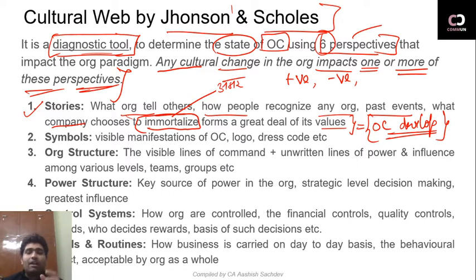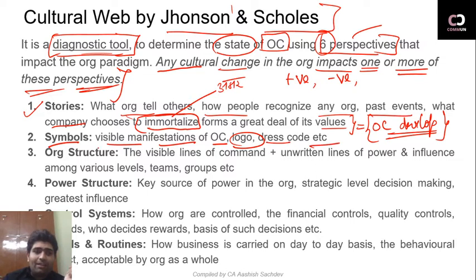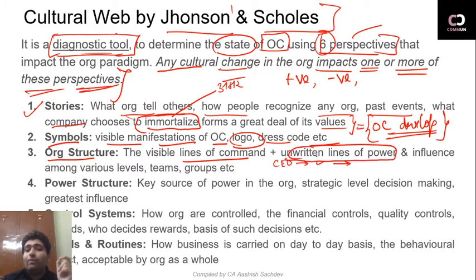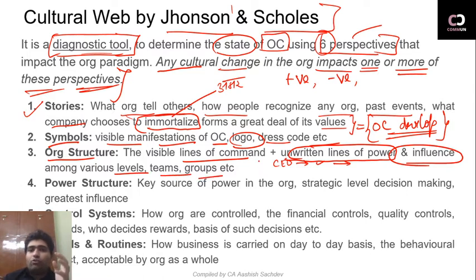Stories are an important factor that can impact organizational culture. Second is Symbols — visible manifestations of organizational culture: logos, dress code, etc. Third is Organizational Structure — these are the visible lines of command: who is the CEO, who are functional-level managers, who are their subordinates, who are the foremen and workers, and how work is divided within the organization.